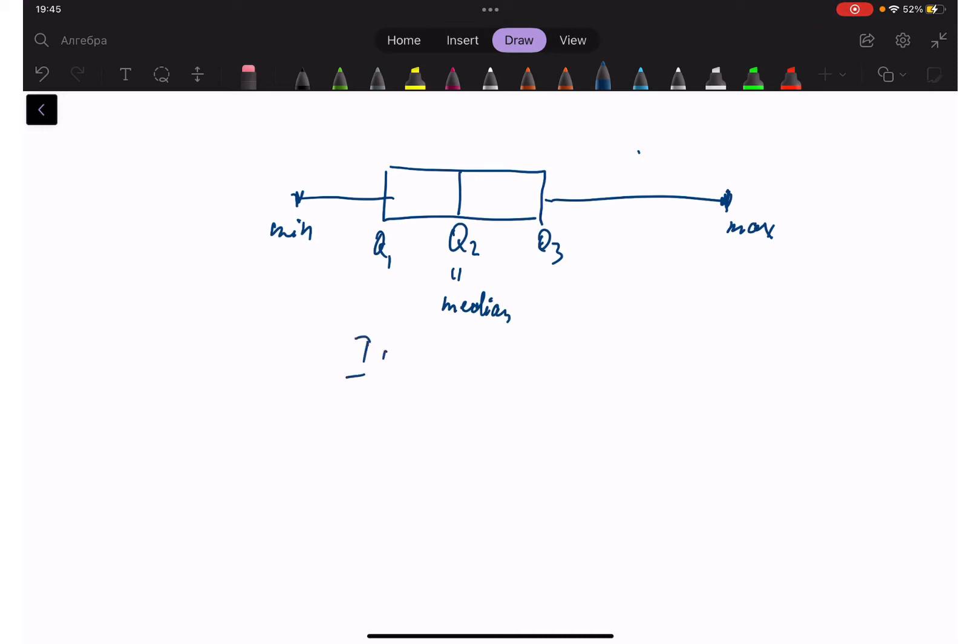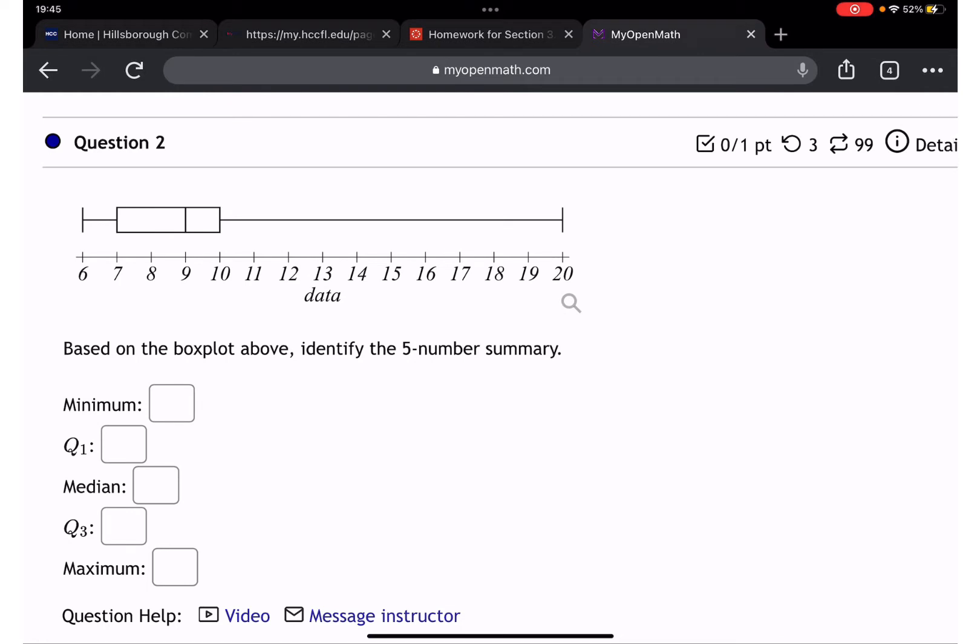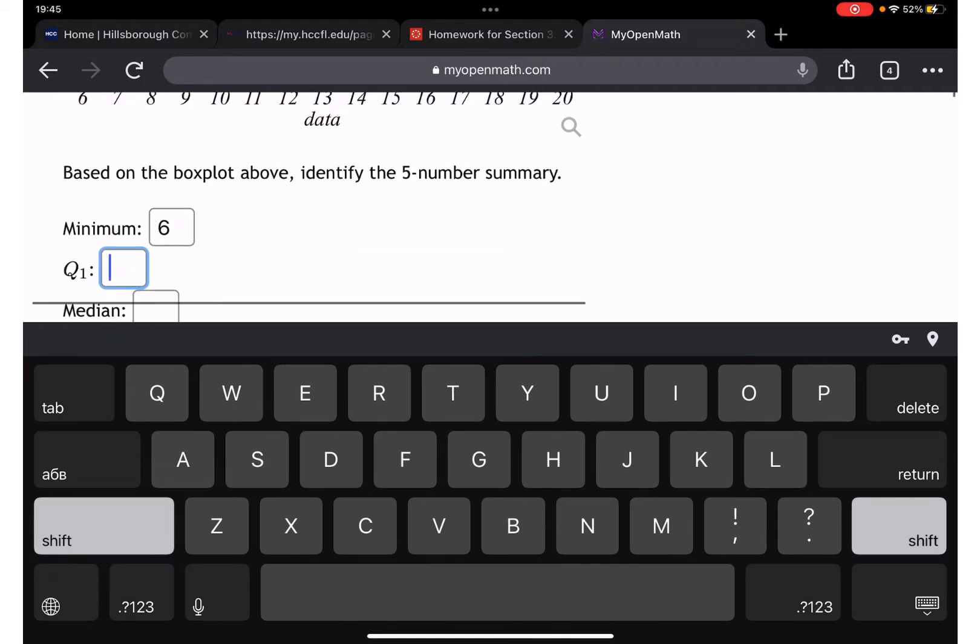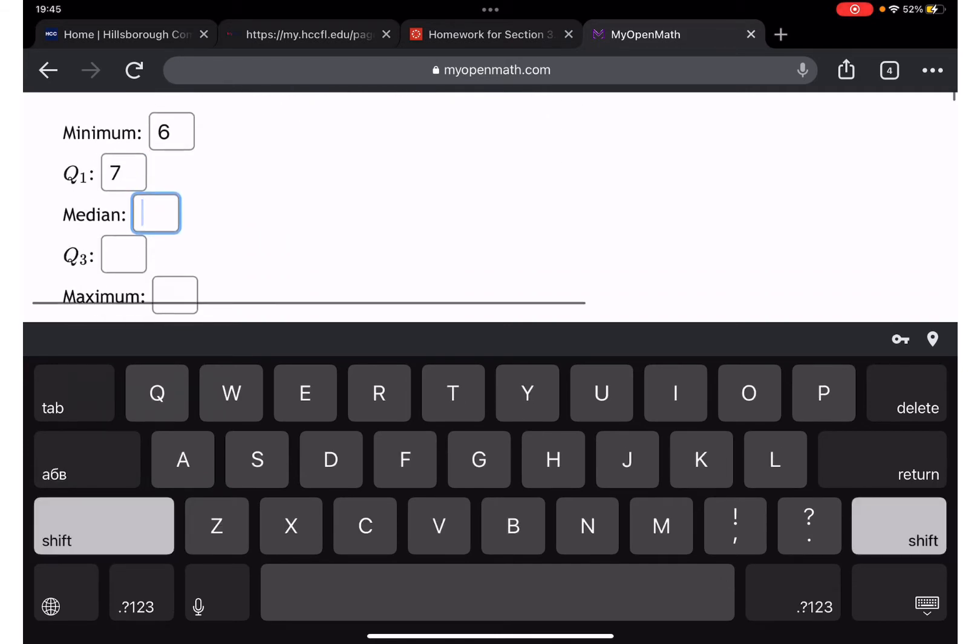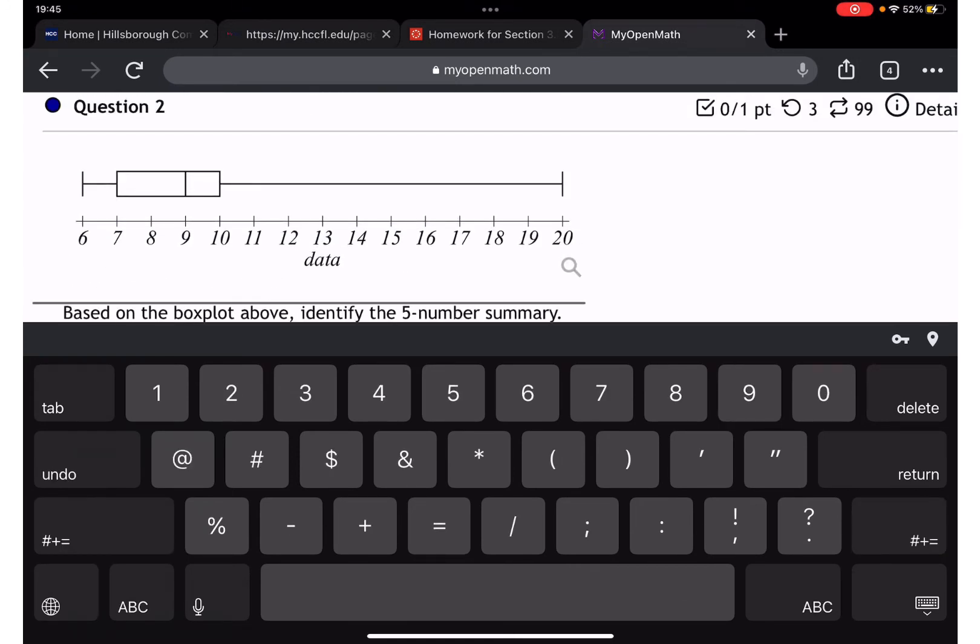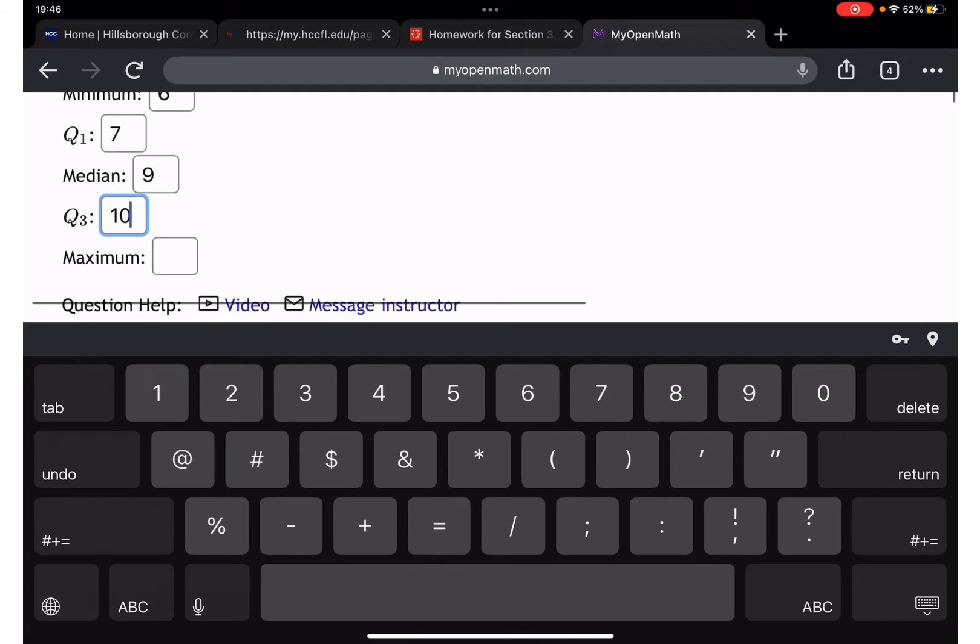And interquartile IQR is equal Q3 minus Q1. The detail about all this meaning you can find out when you watch my lecture. So let's read here: minimum here is six, Q1 is seven, median is nine, Q3 is 10, and maximum is 20.